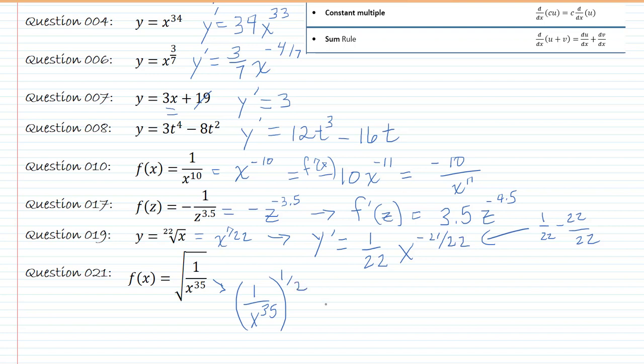Then I can bring the 35th power to the top, makes it negative to the 1 half. And then finally, I remember that I can multiply that inside, so negative 35 over 2.